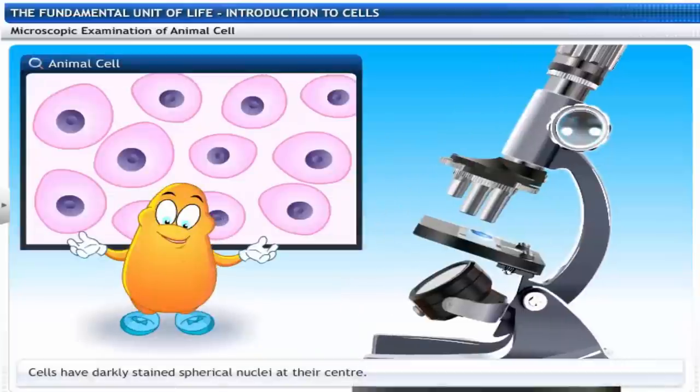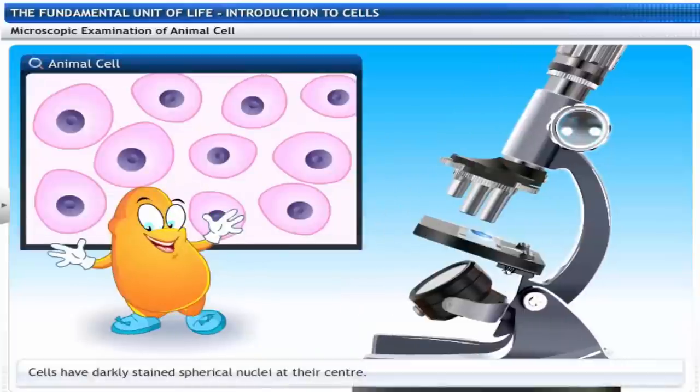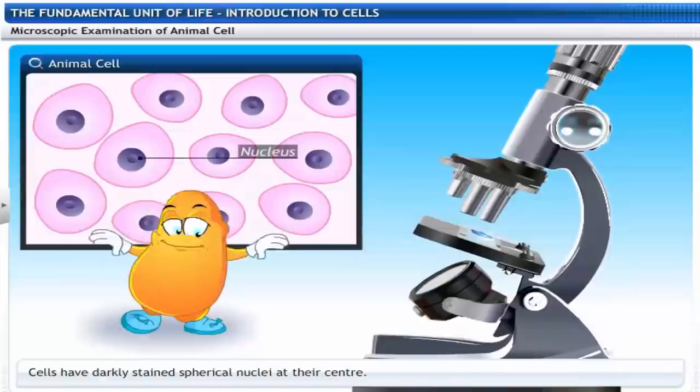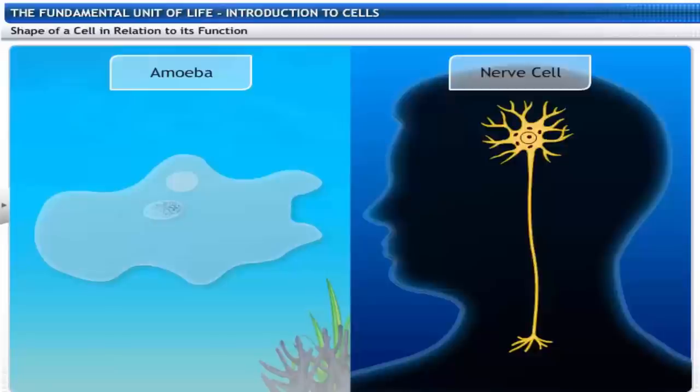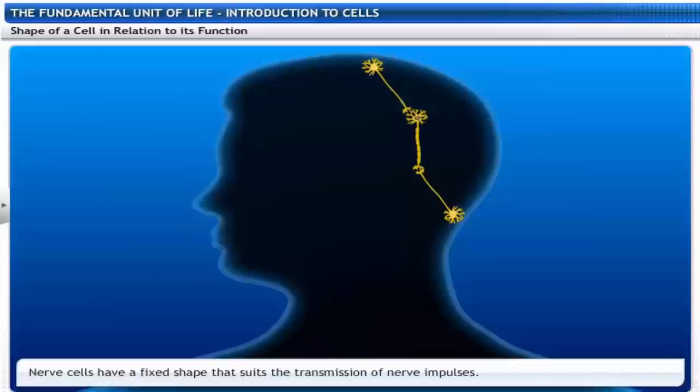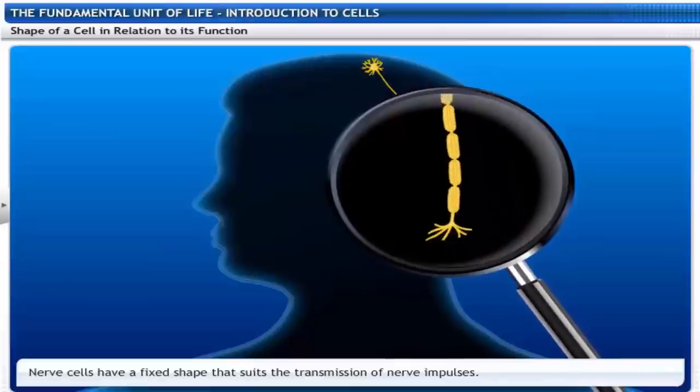Look! The shape of a cell is related to the specific function it performs. Cells like amoeba change their shapes for motility. Cells like nerve cells have a fixed shape that suits their function of transmitting nerve impulses.